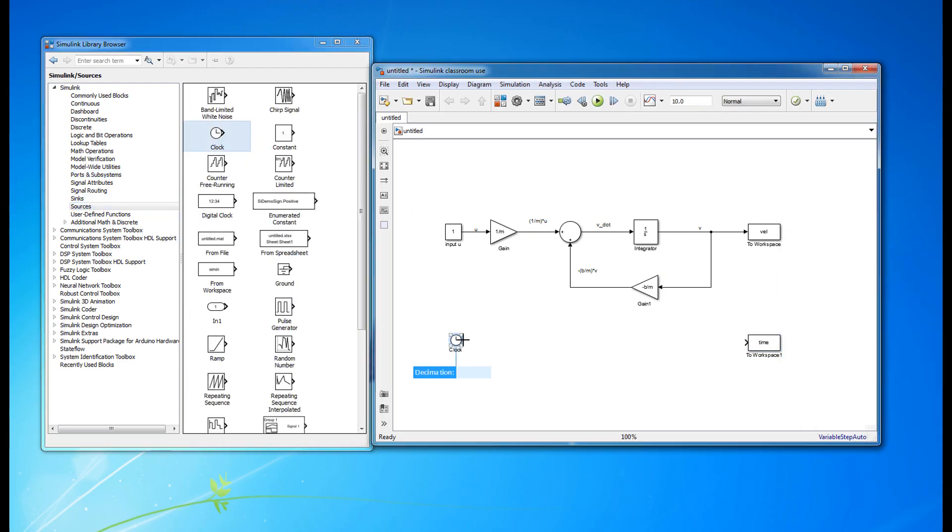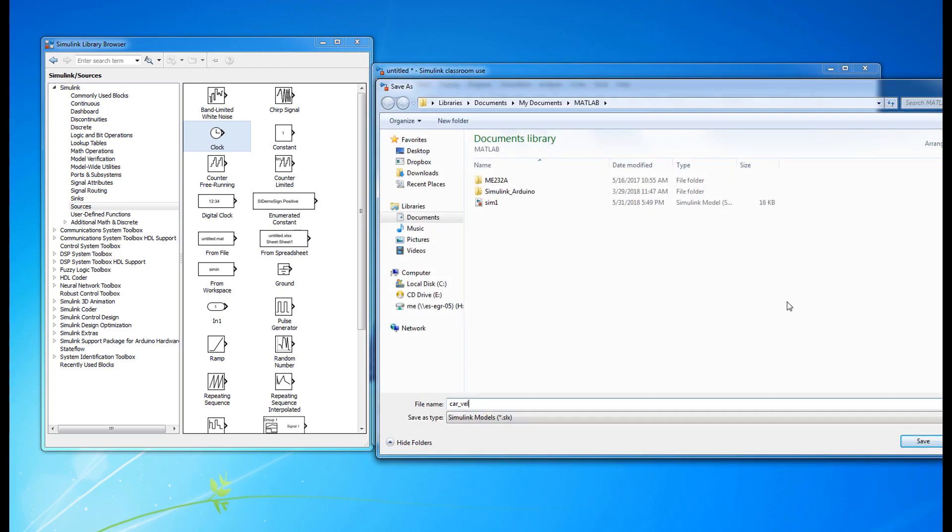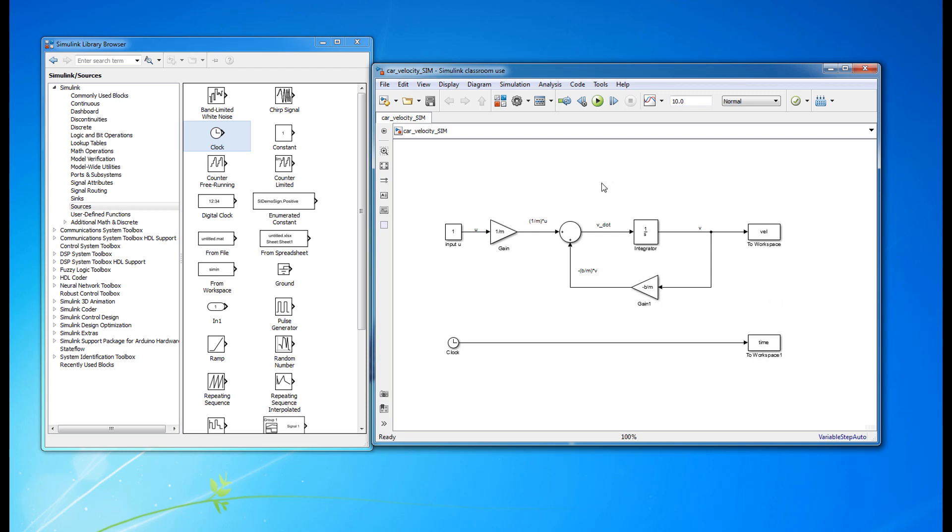Once you have the following block diagram in Simulink, you should save it with a descriptive name like car velocity sim dot slx. Note that MATLAB M files and Simulink slx files should not have the exact same name. We are now ready to start running some simulations, which we'll do in the next video.